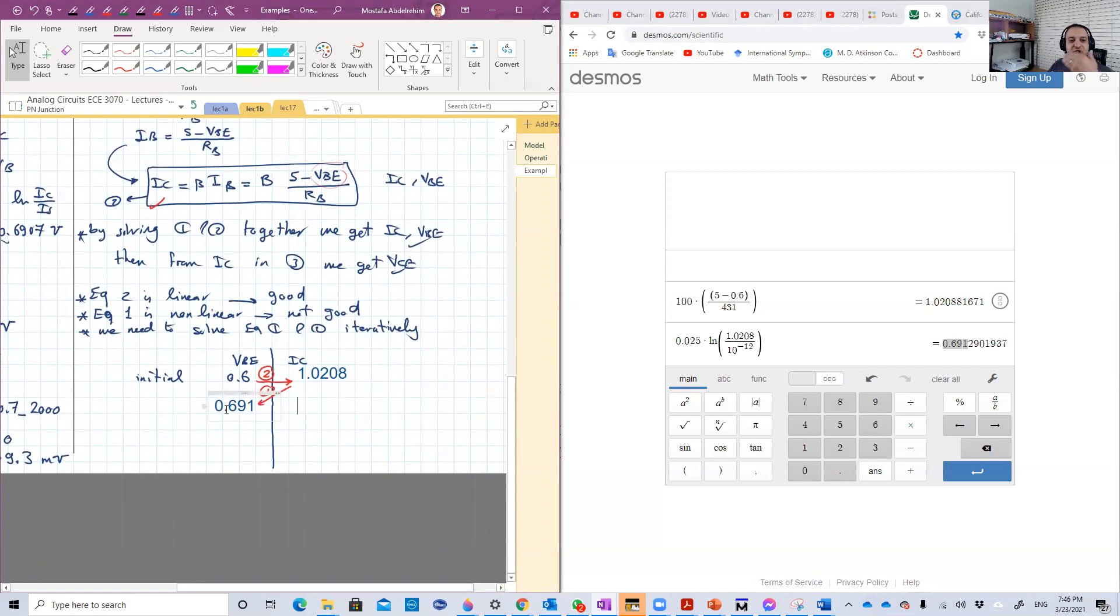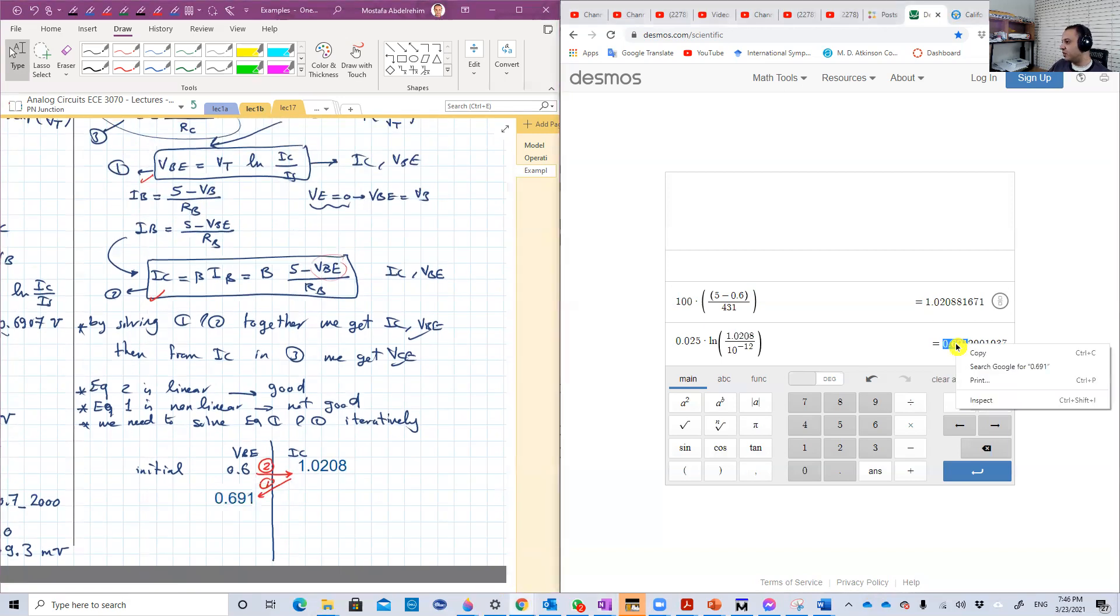Now we're going to again repeat the process. Take this value and substitute in equation two, which is that one. So here it's really easy, just to copy and paste in the online calculator. This will give us this value for IC, 0.9997. Milliamperes, it's approximately one. Good. Then we repeat the process. We take this value and substitute in equation one. Equation one, this is equation one, here. And this will give us this value of mine, 0.6907. Then we repeat the process again. So 0.6907. This will give us this value 0.9998.